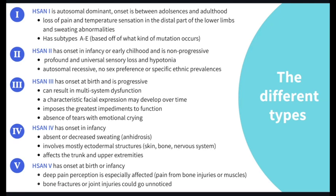HSAN 2 has onset in infancy or early childhood and is non-progressive. It is profound in universal sensory loss and hypotonia. It is autosomal recessive with no sex preference or specific ethnic prevalence.